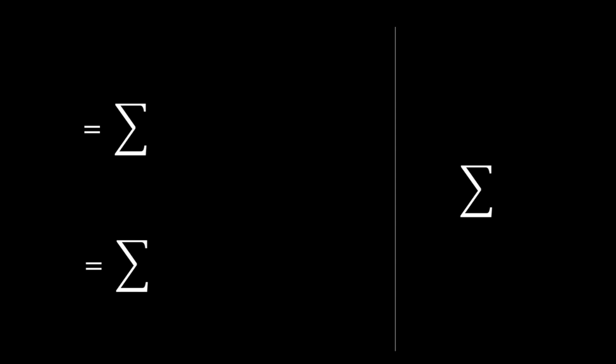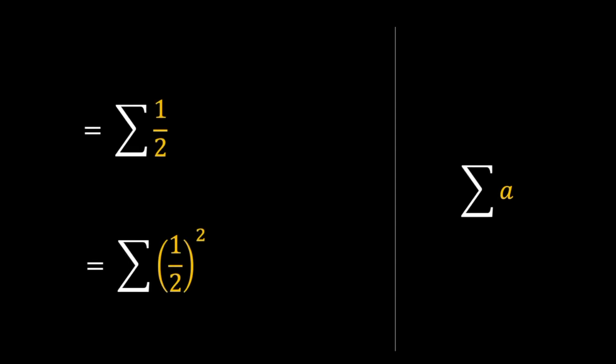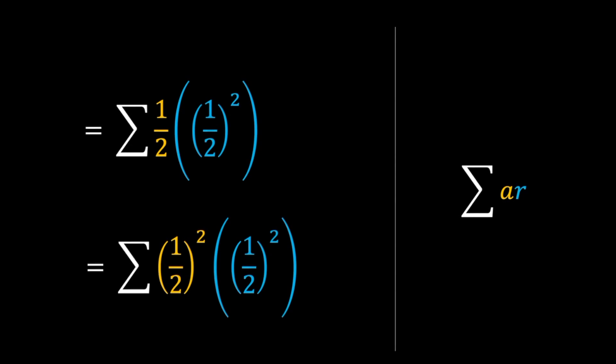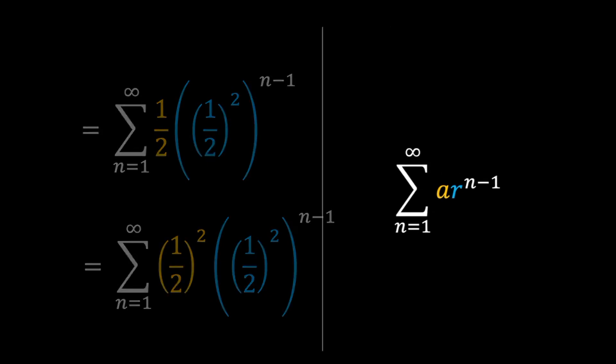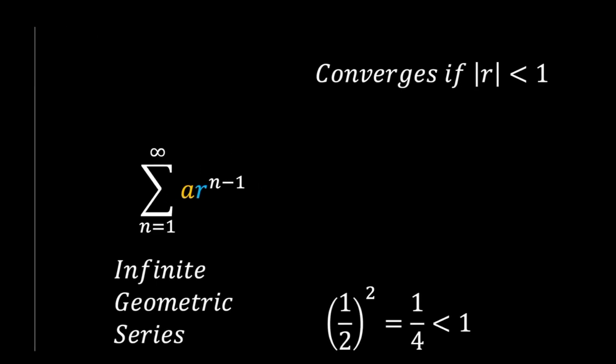Constructing a generalized formula for the sums will help us with this. We have the first term called A, and each successive term is multiplied by a certain number of times by a half raised to the power 2. This is R. Varying with the index N, R is raised to the power of N minus 1, with N starting from 1 and going to infinity. Hence, we have the generalized form for an infinite geometric series.